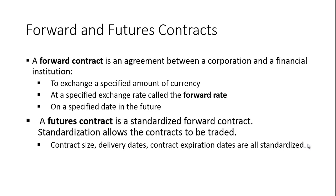A forward contract is an agreement between a corporation and a financial institution to exchange a specified amount of currency, at a specified exchange rate (the forward rate), on a specified date in the future. A futures contract is a standardized forward contract. Standardization allows the contracts to be traded — contract size, delivery dates, and contract expiration dates are all standardized.